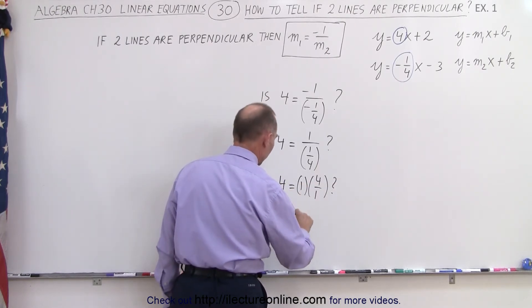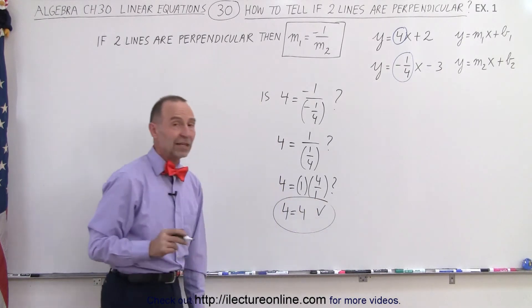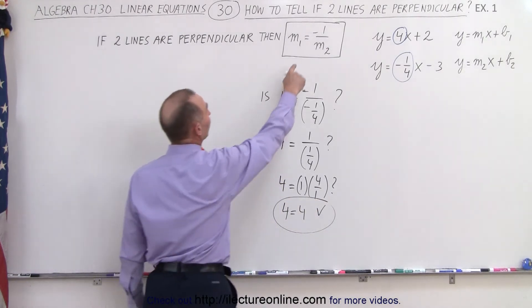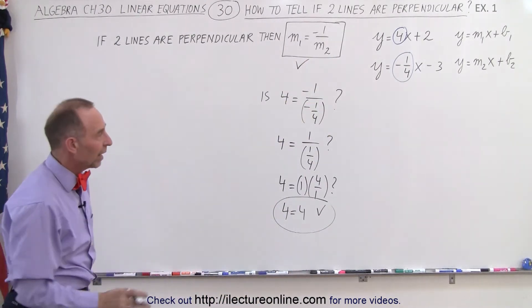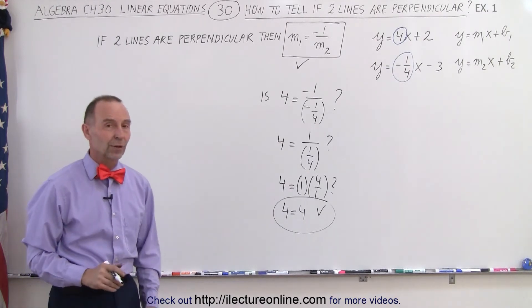And of course, that equals 4 equals 4. Indeed, we found that the left side equals the right side, which means this condition does match for those two equations, which means those two lines are indeed perpendicular to one another.